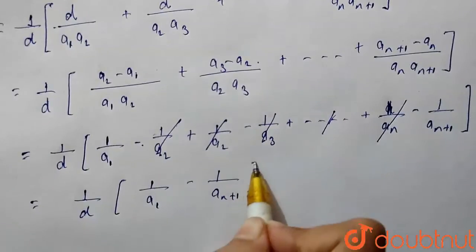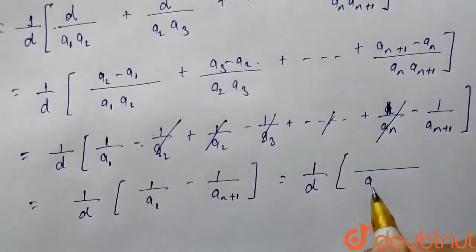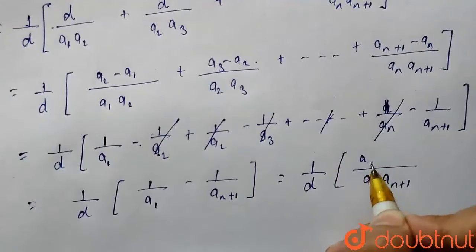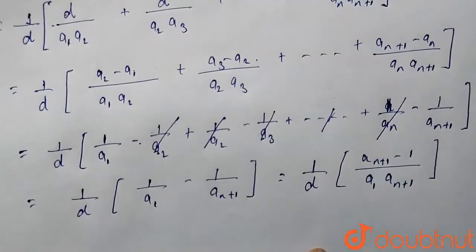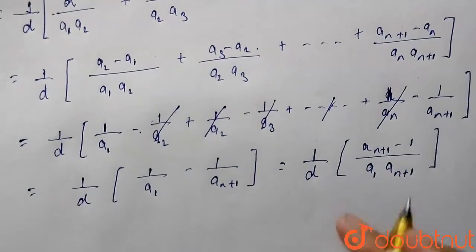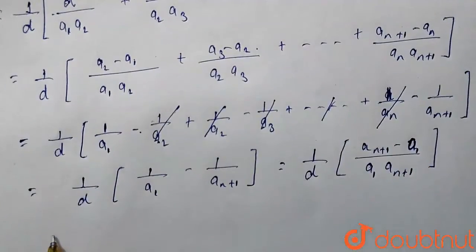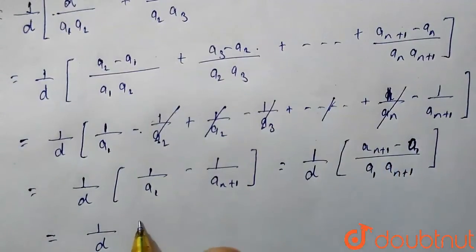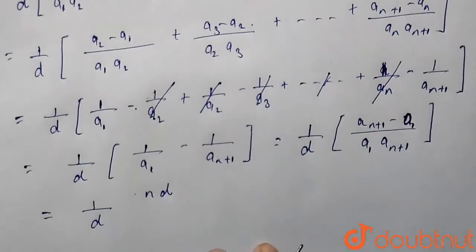We will get 1 upon d into 1 upon a1 minus 1 upon an plus 1. Now, taking LCM we will get 1 by d times an plus 1 minus a1 upon a1 times an plus 1. So we will get an plus 1 minus a1 will give n times d as it is the nth term.